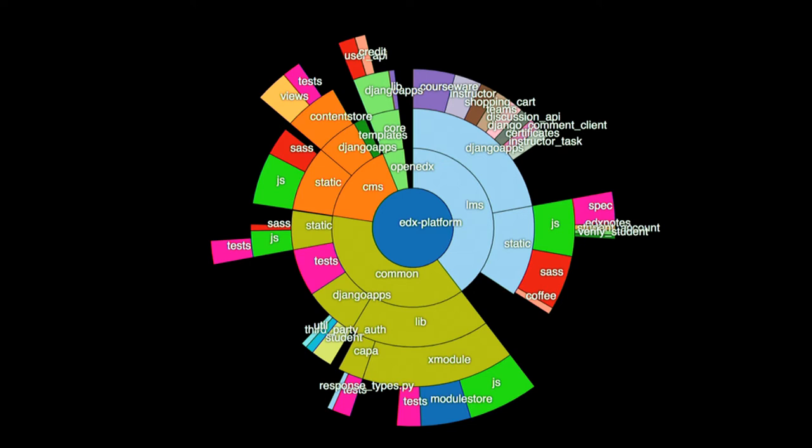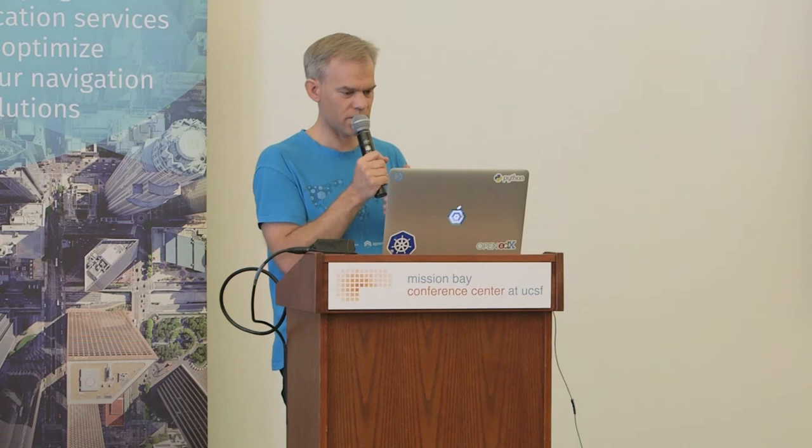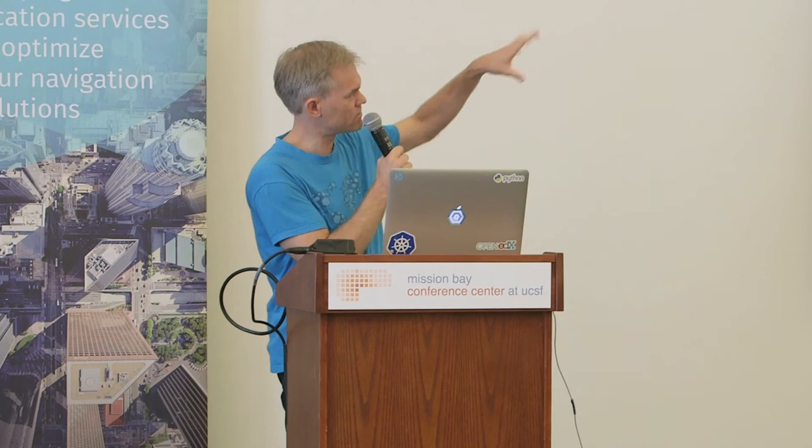Looking at the breakdown more visually, edX platform has four primary components. You have the LMS — about 170,000 lines of code — the CMS at 71,000 lines of code where you author your courses, the core at about 18K, and the common at 161K. The common code is shared between the CMS and LMS. The green is JavaScript code and the pink is tests, so it has pretty good test coverage.